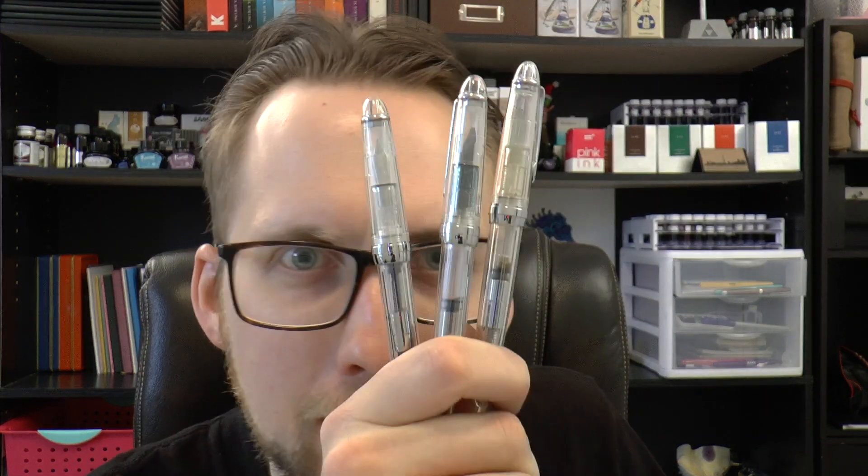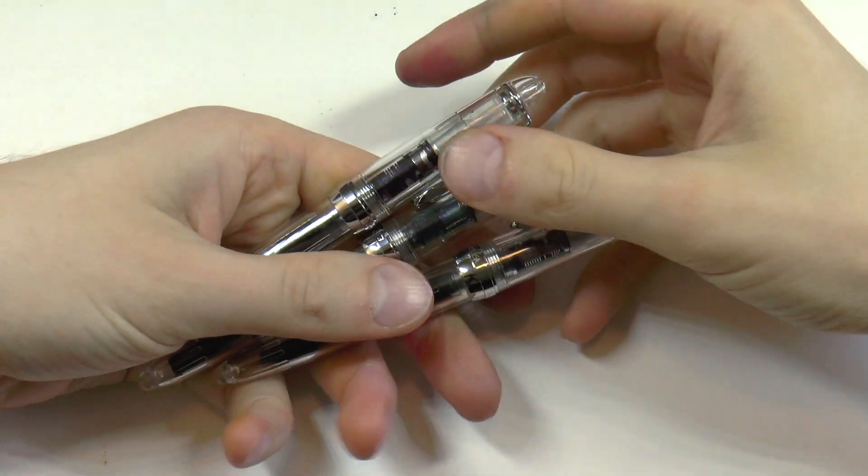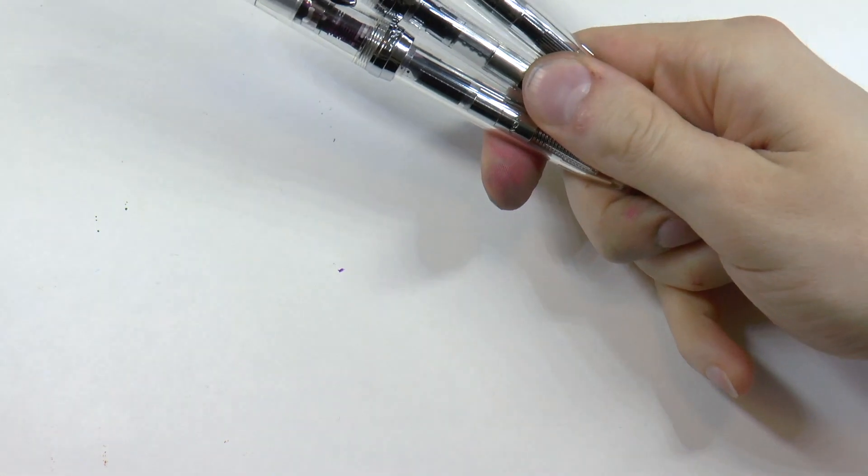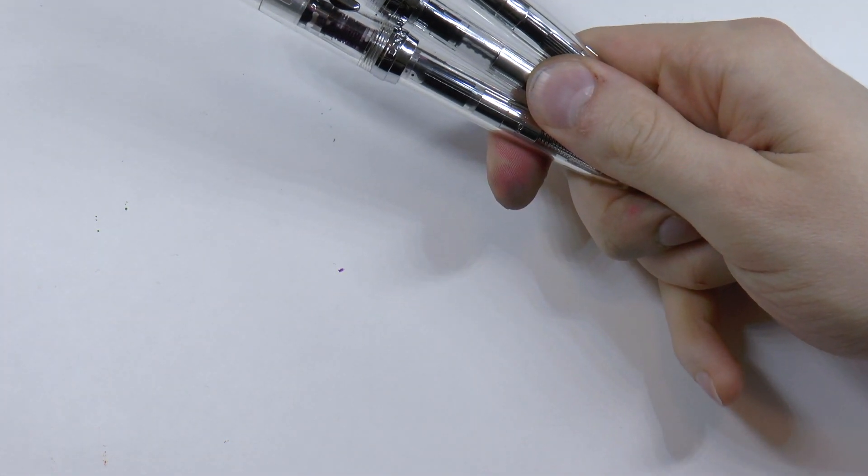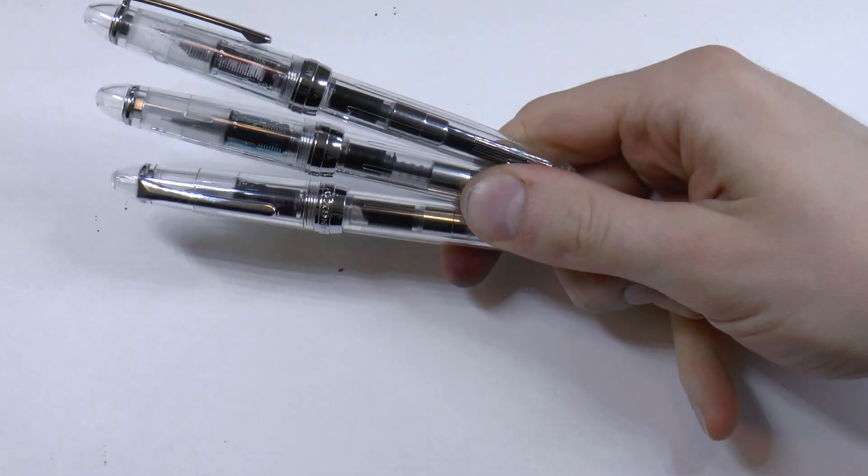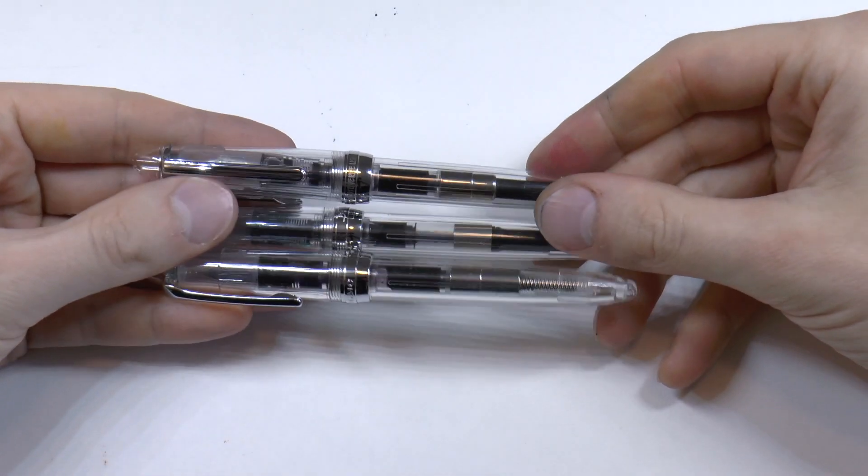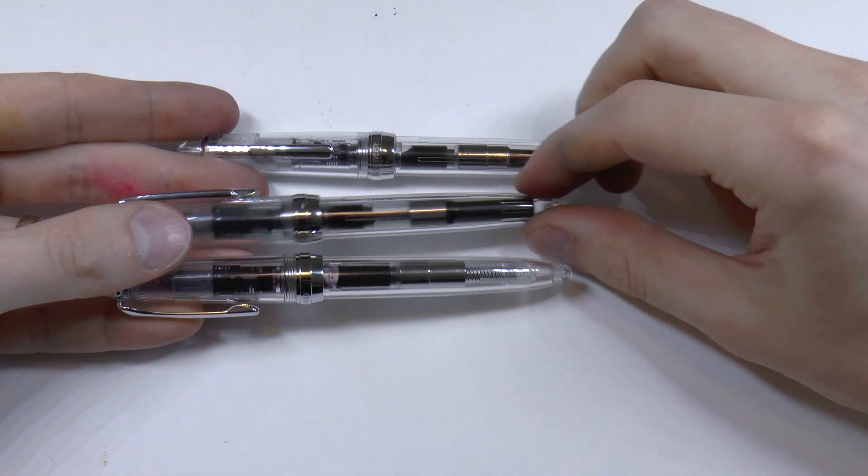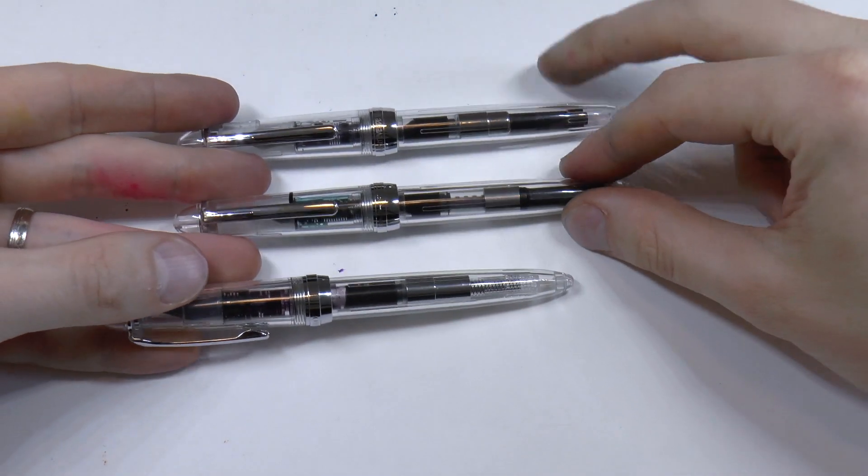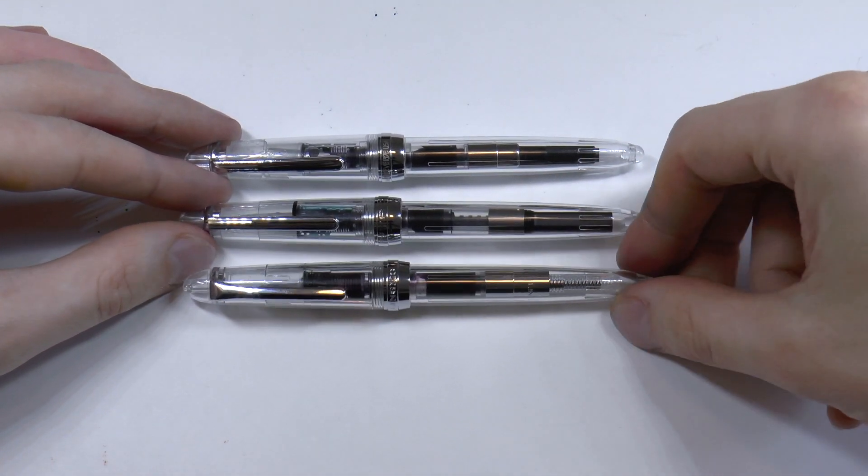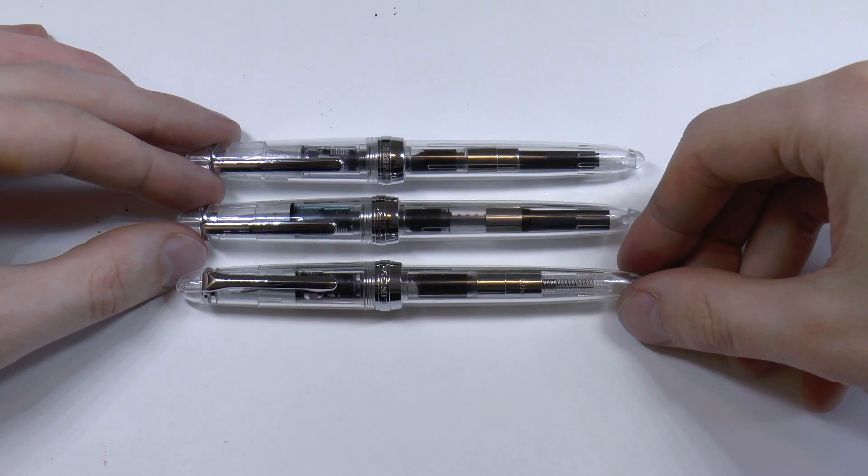Let's have a threesome - fountain pen shootout. Here we go with these three pens, and I thought it would be interesting to show these off side by side because they're all variations on a theme. They're all very strongly influenced by Sailor, and we have three versions here.